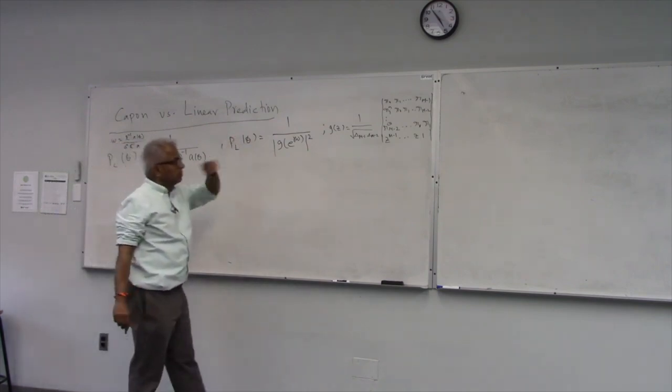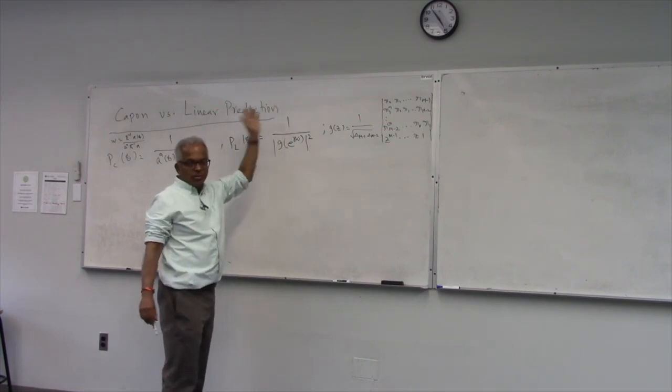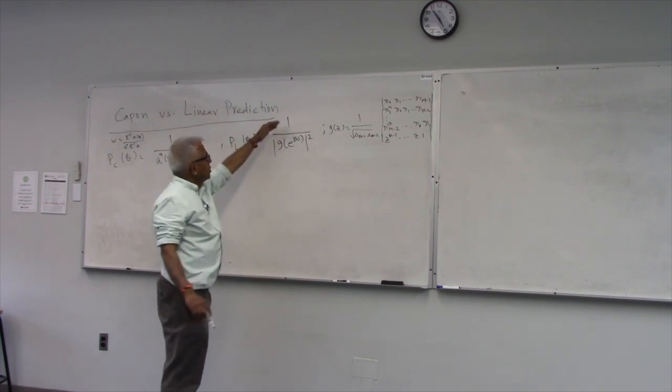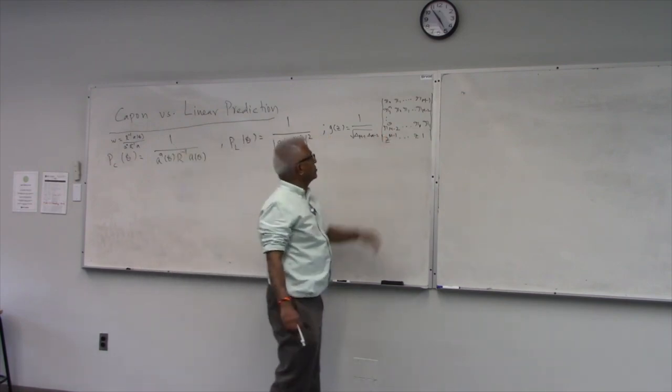Whereas in the linear prediction, we went through this, right? We were trying to predict one of the elements in terms of the other. That way captured the whole spectrum turned out to be one over a polynomial squared where the polynomial is of this form.